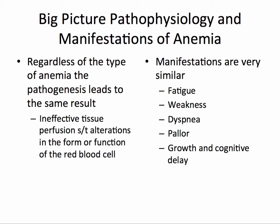The pathogenesis leads to the same result because there's some form of abnormality that interferes with the hemoglobin's ability to bind oxygen. There's going to be a decrease in oxygen availability in peripheral tissues, and therefore ineffective tissue perfusion results. Regardless of the type of anemia, some manifestations are very similar — all anemic patients will have fatigue, weakness, dyspnea, pallor, and growth and cognitive delay.